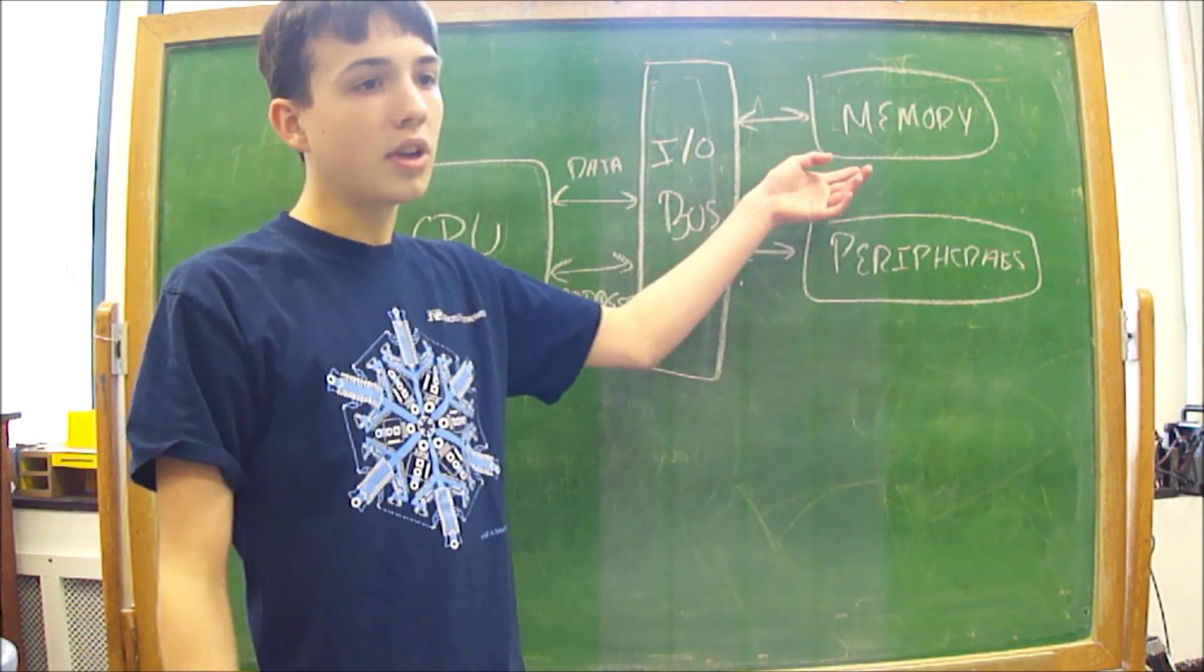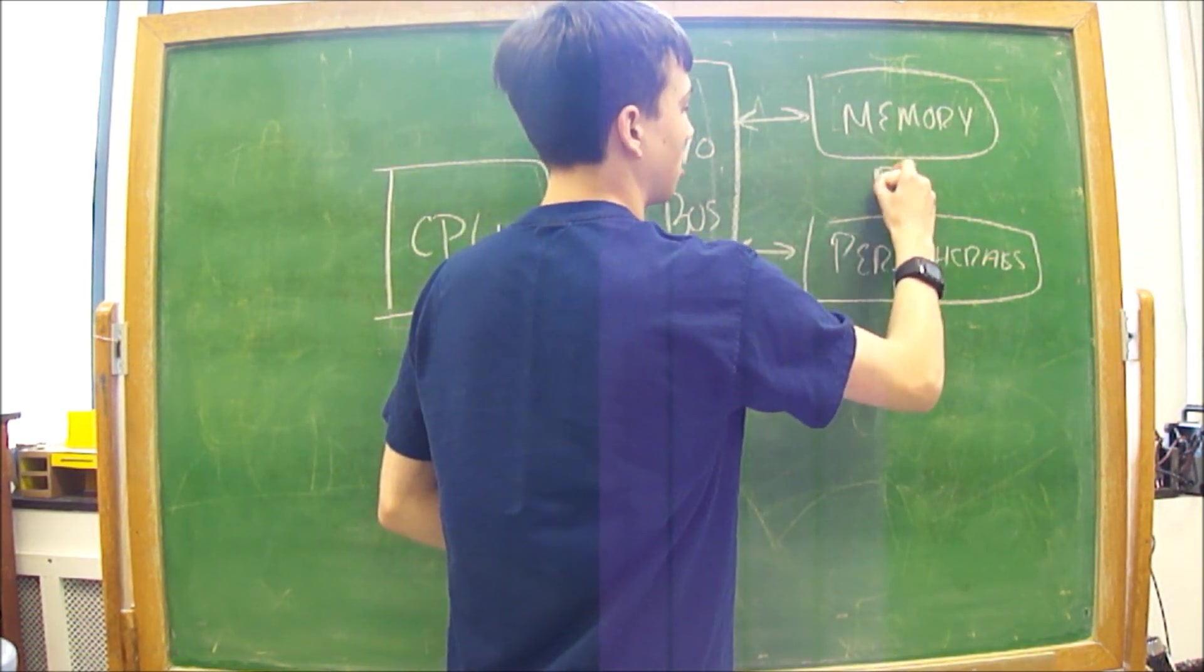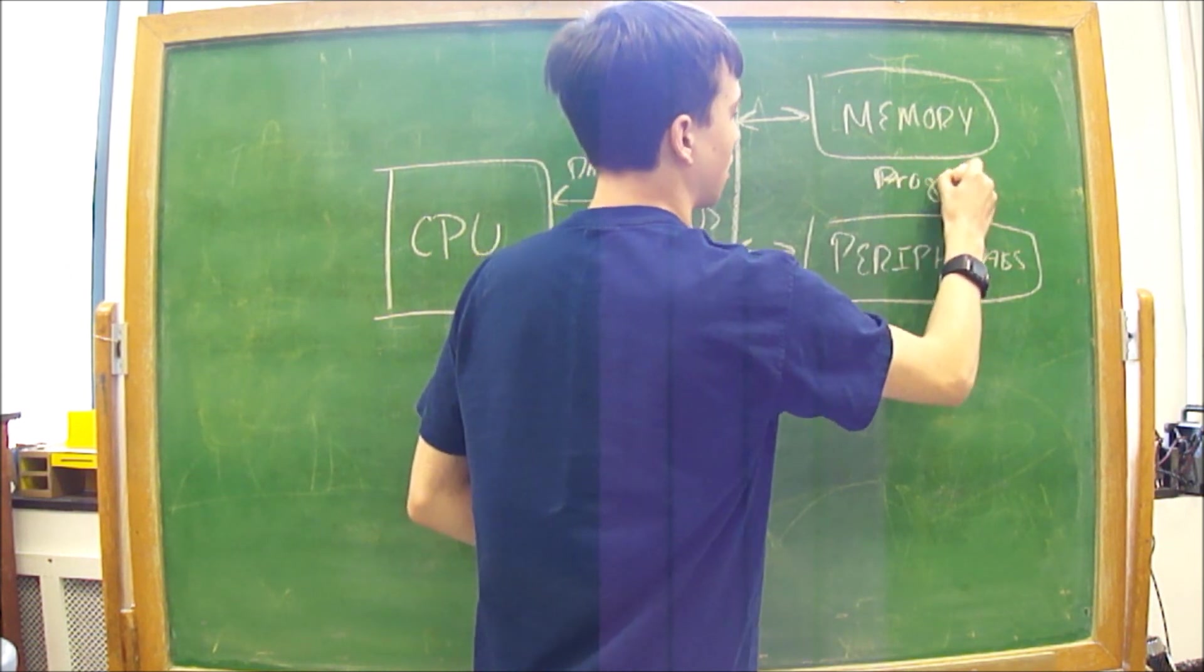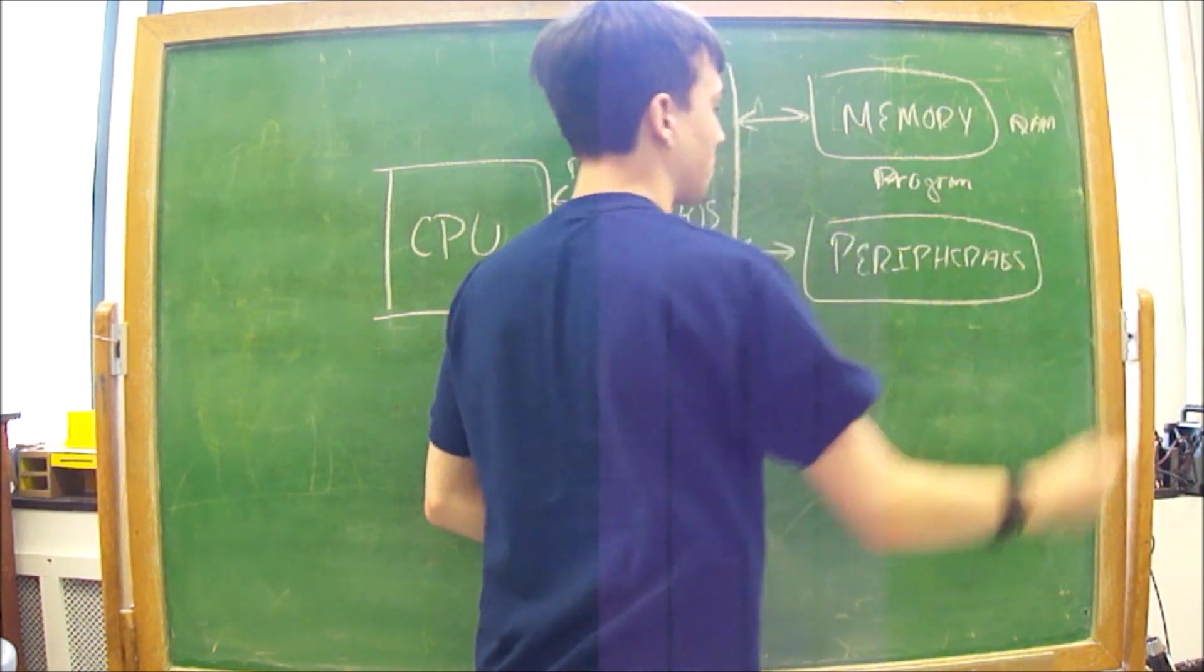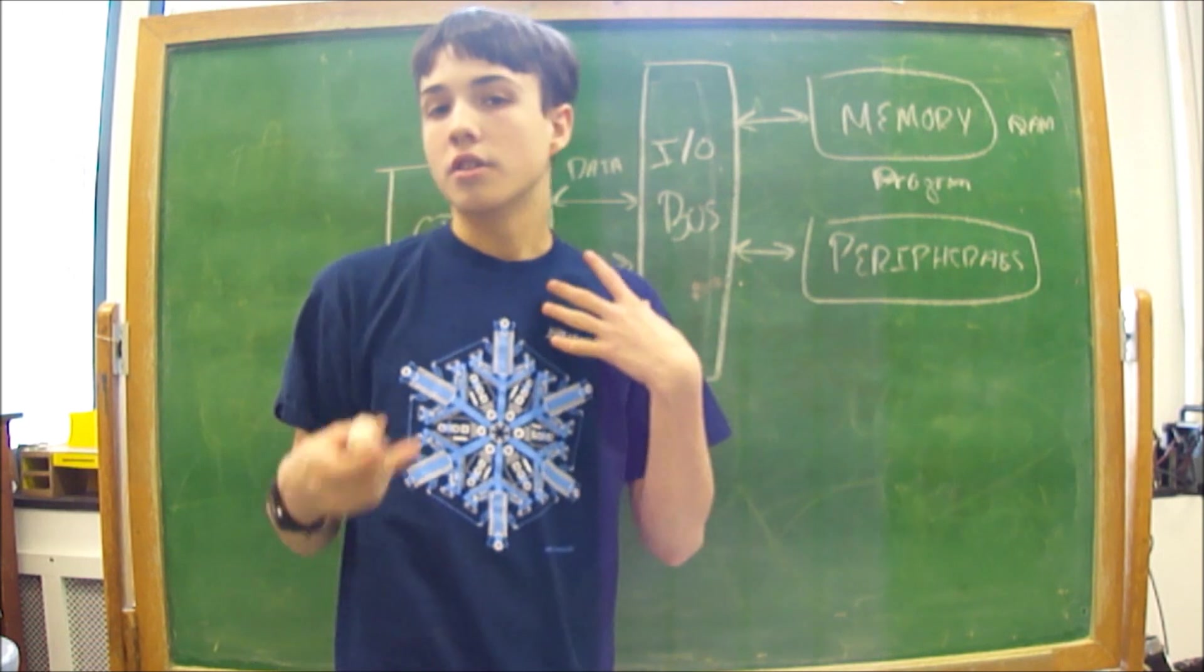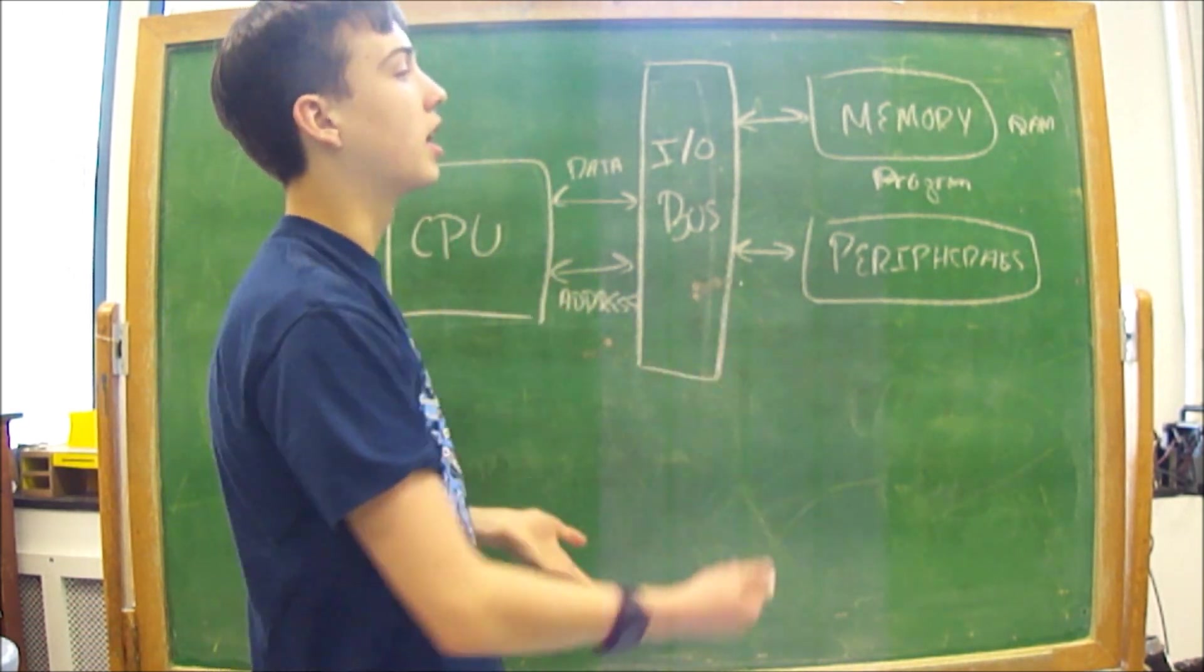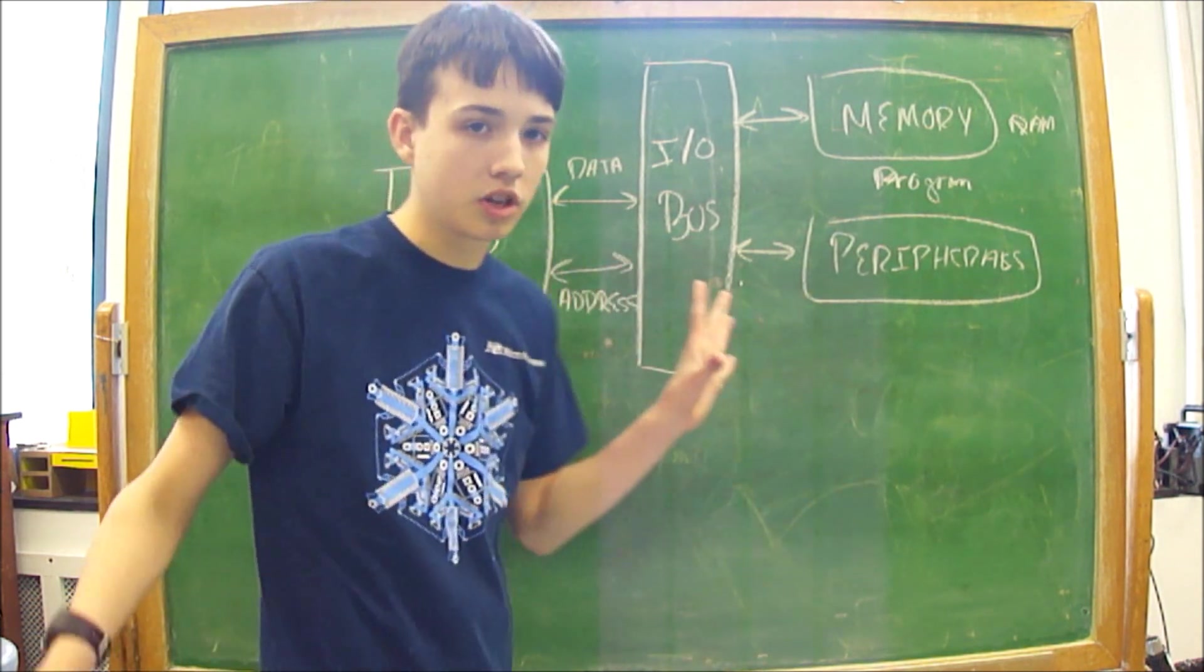So your memory is actually where the program is stored. So this is RAM. And your peripherals are like your mouses, your keyboards, any way you communicate with the computer. And so this is just basically how it works.